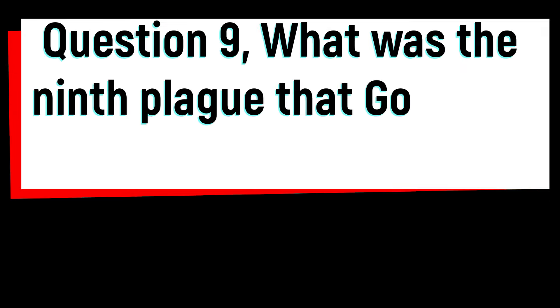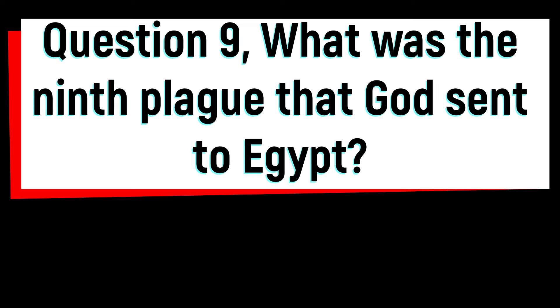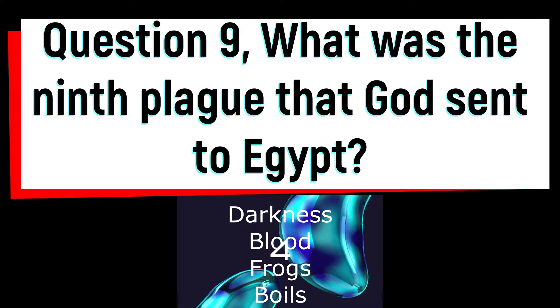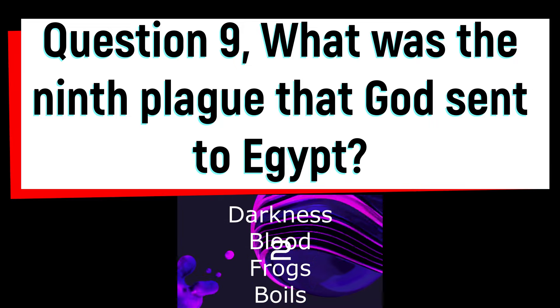Question 9: what was the ninth plague that God sent to Egypt? Was it darkness, blood, frogs, or boils? The answer is darkness. God made darkness cover the land of Egypt for three days. The darkness was so thick that people could not see anything or anyone.